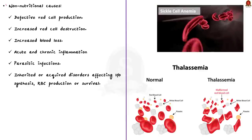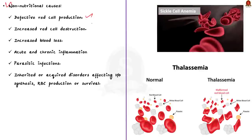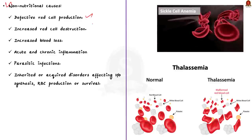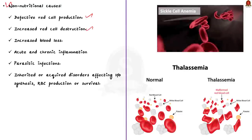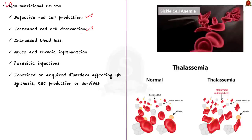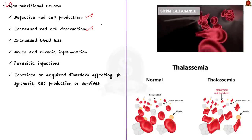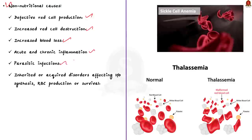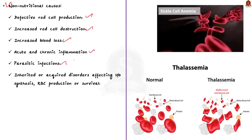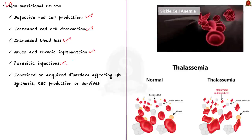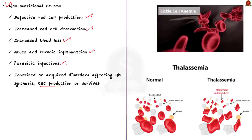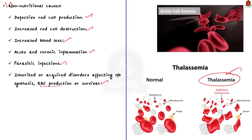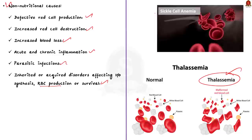Non-nutritional causes include: defective red cell production (e.g., aplastic anemia preventing the body from making enough red blood cells); increased red cell destruction (e.g., enlarged or diseased spleen); increased blood loss; acute and chronic inflammation; and parasitic infections. Inherited or acquired disorders affecting hemoglobin synthesis, RBC production, or survival — such as sickle cell disease and thalassemia — can also cause anemia.